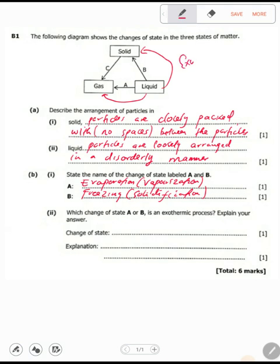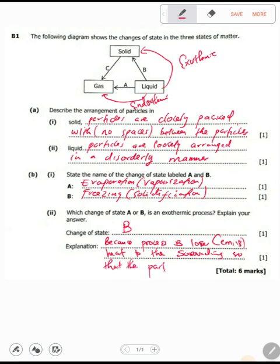So this one is exothermic, and this is endothermic. Which one is exothermic? B. Simply because process B loses, or emits, heat to the surrounding so that the particles can come together.